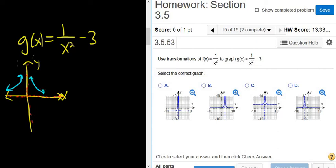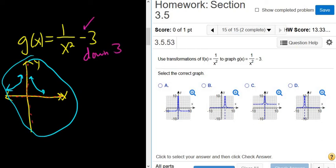We're taking this entire graph and shifting it down 3. That's what the minus 3 means—we're subtracting 3 from the entire function. This is the graph of 1/x² and we're shifting it down 3.